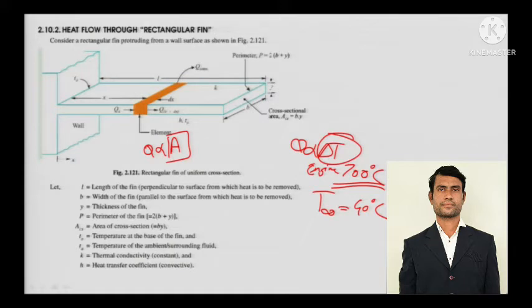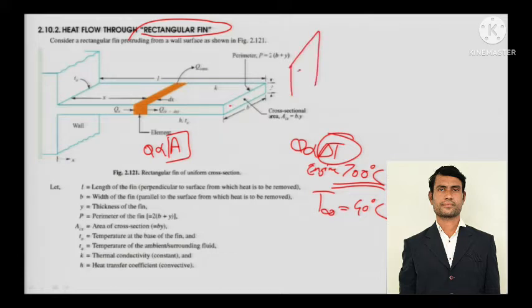A rectangular fin has a rectangular cross-sectional area. Had it been a cylindrical fin it would have a cylindrical shape, but right now we are dealing with a rectangular fin.